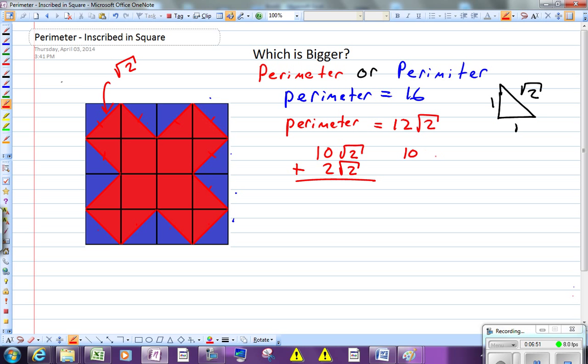Now, I also know, and this is a good fact to know, the square root of two is approximately 1.41. For our purposes here, that's plenty precise enough.